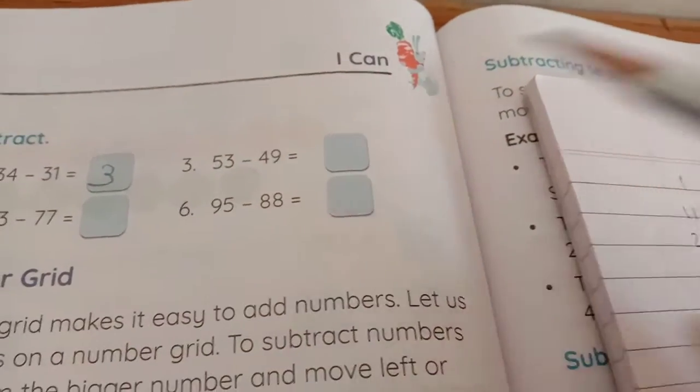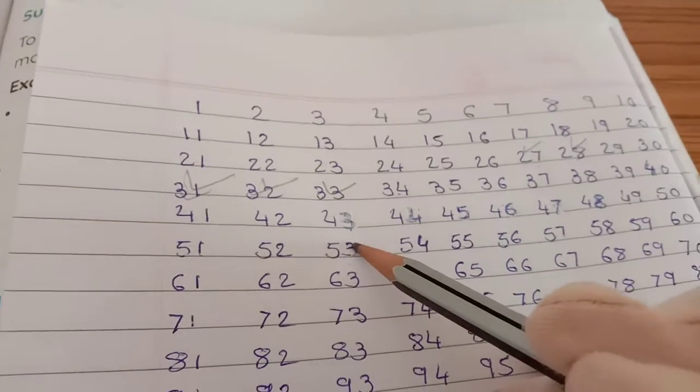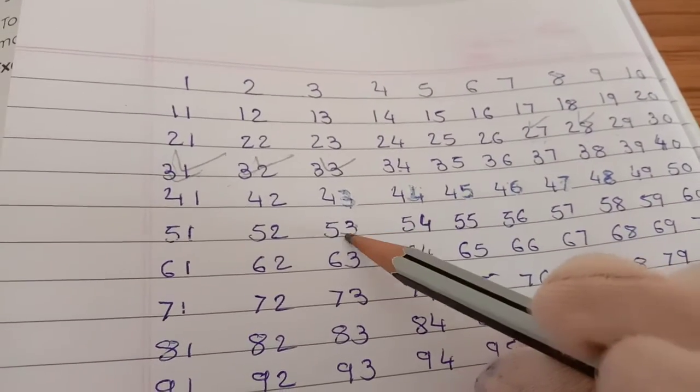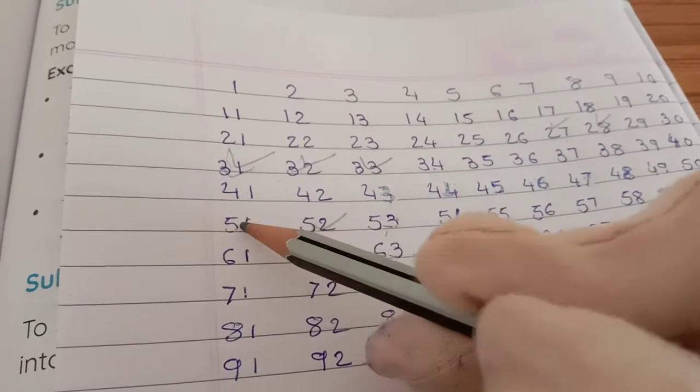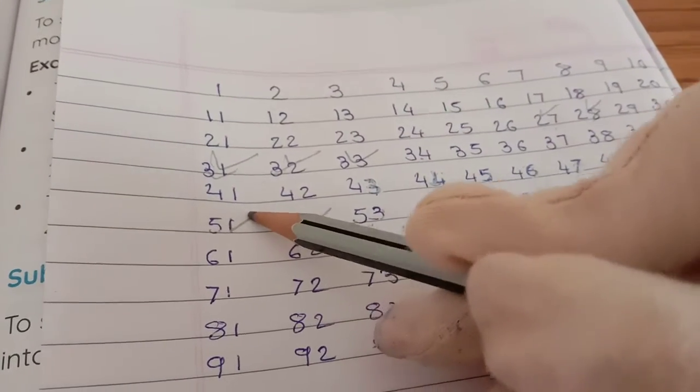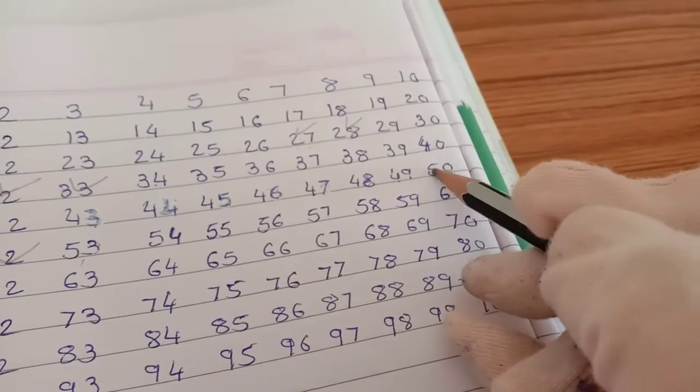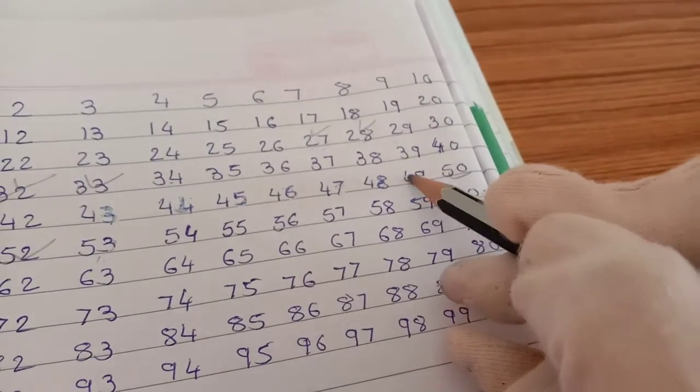Now next 53 minus 49. So 53 is here, we have to go back. 49, okay? 49, okay? 53, then 52, 51, 50 and 49.